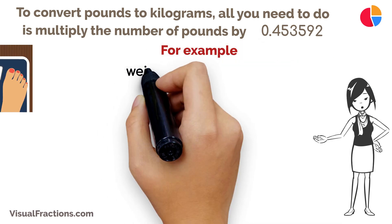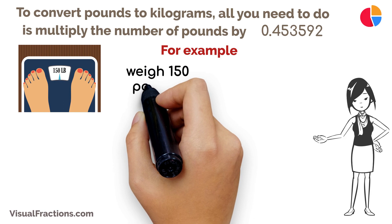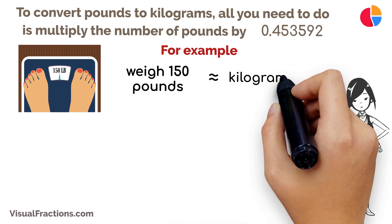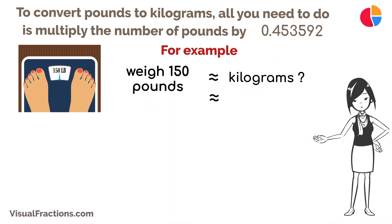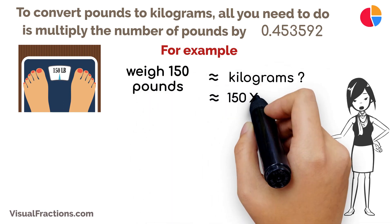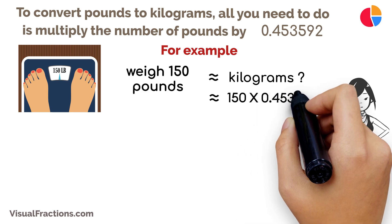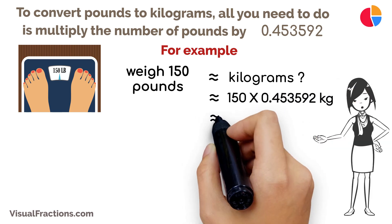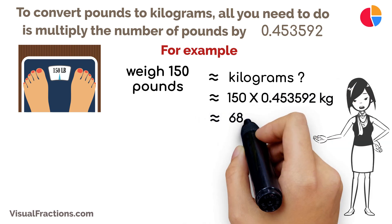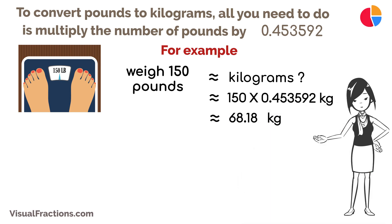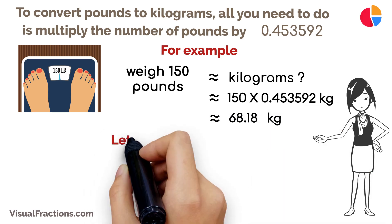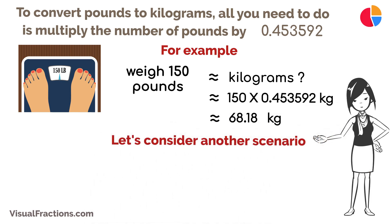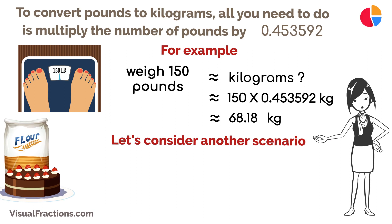For example, if you weigh 150 pounds and want to know your weight in kilograms, simply multiply 150 pounds by 0.453592. That gives a total of approximately 68.18 kilograms.